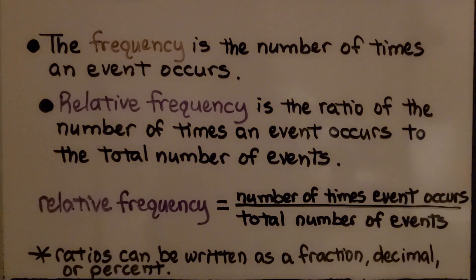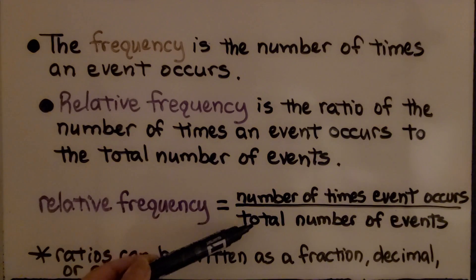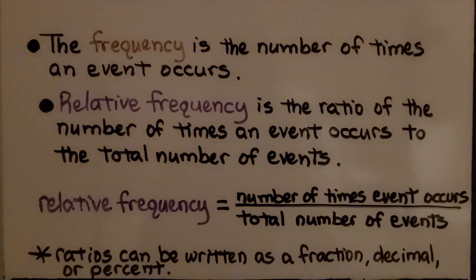Frequency is the number of times an event occurs. Relative frequency is the ratio of the number of times an event occurs to the total number of events. So it's like a fraction. The relative frequency is the number of times the event occurs over the total number of events. Ratios can be written as a fraction, decimal, or percent.